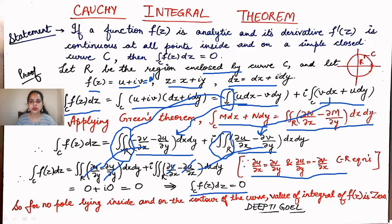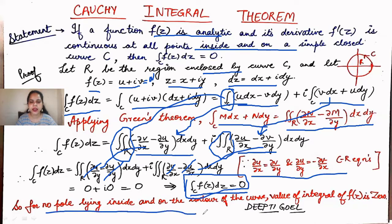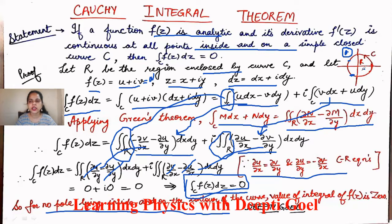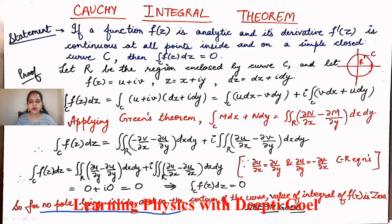This was the statement of the Cauchy integral theorem: as long as the function is analytic and its derivative is continuous at all points inside and on a simple closed curve, the integral over C of f(z)dz will be equal to zero. Always remember that no pole or singularity should lie inside or on the contour. The singularity must lie strictly outside. If the singularity lies inside the closed curve, we apply the Cauchy integral formula, which we shall discuss in successive modules.